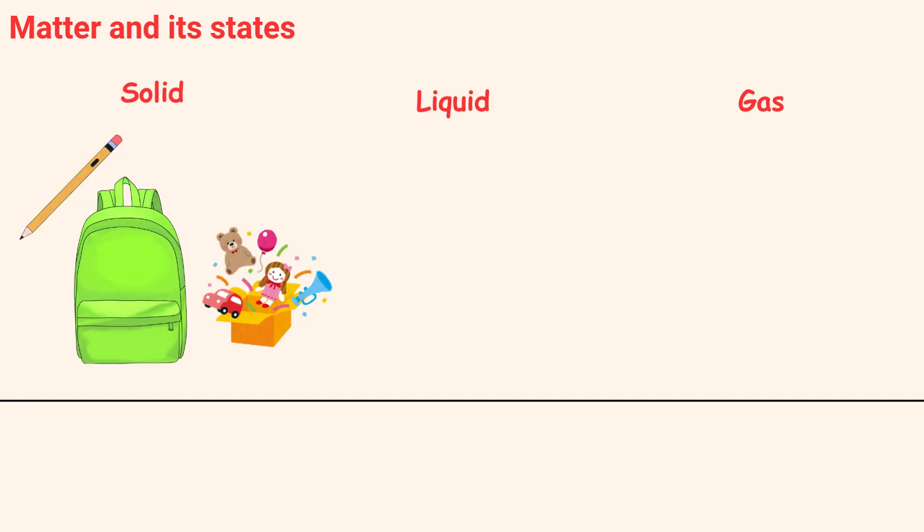Matter can exist in three main forms or states: solid, liquid, and gas. A solid has a fixed shape and does not flow, like your pencil, your school bag, toys, or an ice cube.